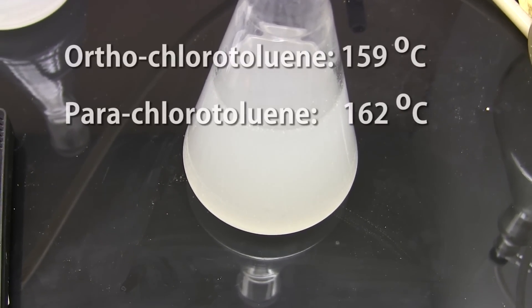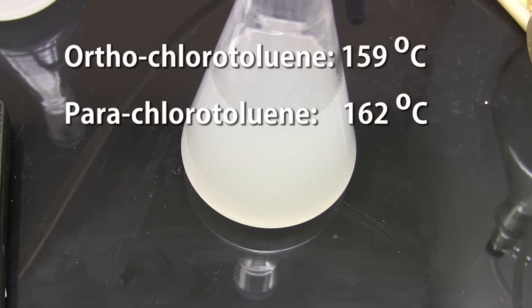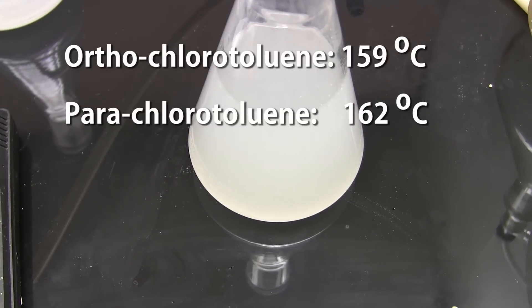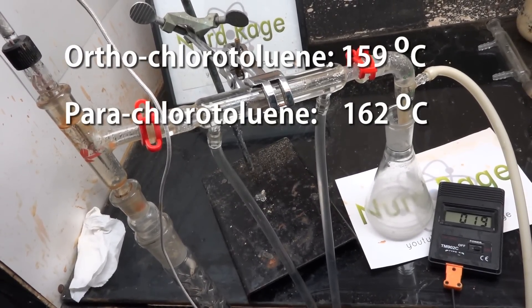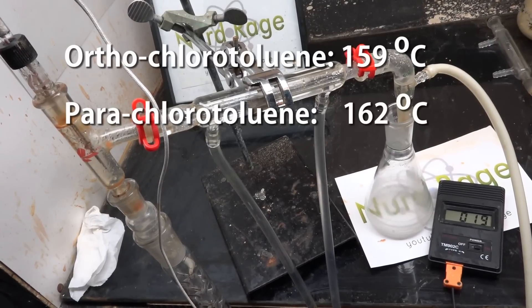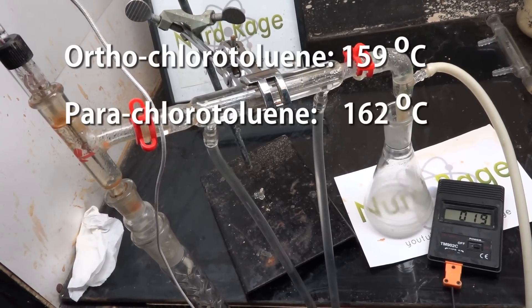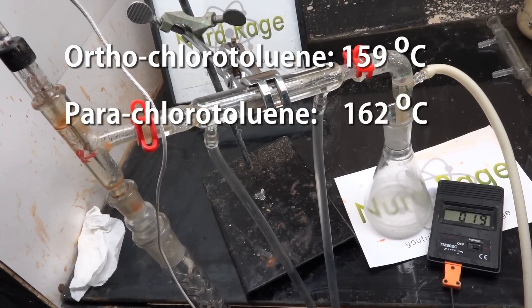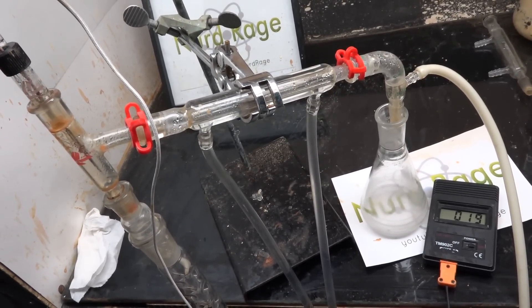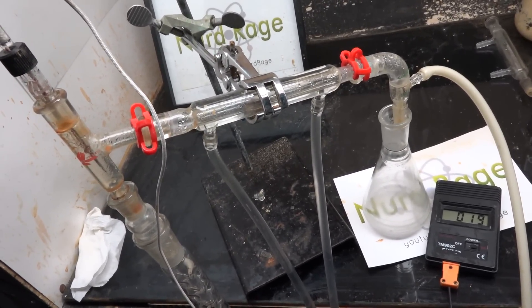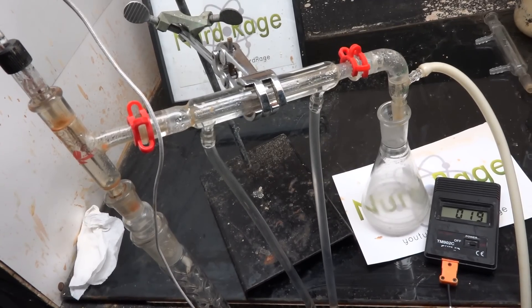Now ortho and para chlorotoluene have slightly different boiling points and so they can be separated industrially by fractional distillation. Unfortunately the overlap of their vapors is so great that you need a huge column of 200 theoretical plates or more. One of the patents I read called for a column 13 meters long. Yeah, my puny little Vigreux column is not going to cut it. We're going to have to use a chemical approach rather than physical.